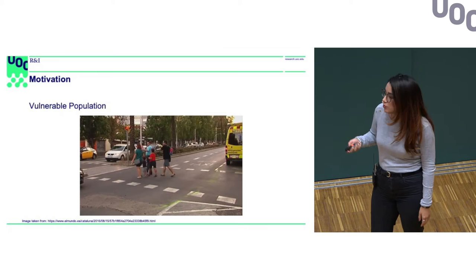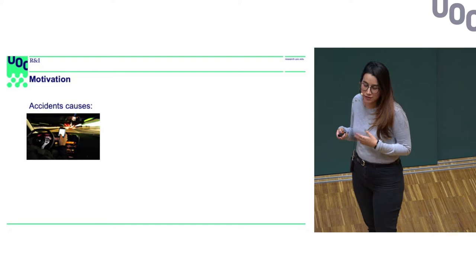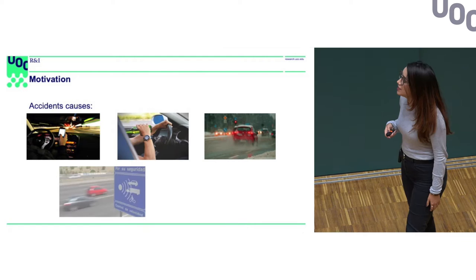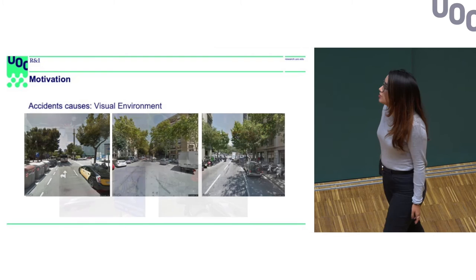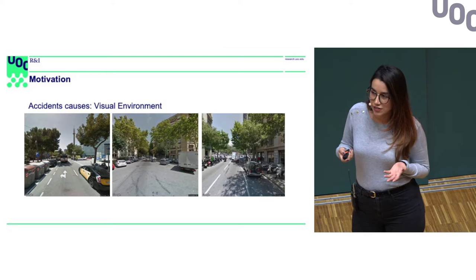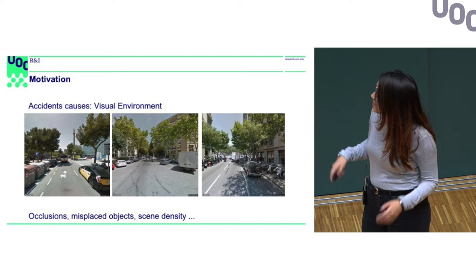We are aware that accidents can be caused for multiple reasons. Some of these are distraction by technologies, alcohol consumption, weather conditions, high speed, and ignoring traffic signs, among others. But in our project, we are going to study one specific reason: the visual environment. It means there is something visual in the urban and city composition that could increase the accident ratio — for example, occlusions, misplaced objects, and scene density.